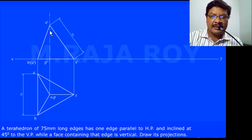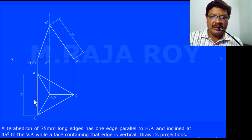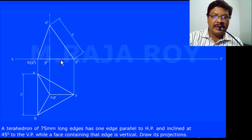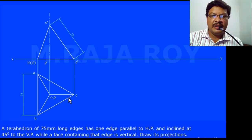While drawing the front view, the axis length is not given in the problem, but for the tetrahedron all face edges are equal and that face edge length is 75 mm. So if you consider face edge OC, this OC is parallel to XY. When the top view is parallel to XY, you will get the true shape of the line in the front view. So this particular face edge can be considered as a straight line inclined to HP and parallel to VP, and the front view of OC will give the true length of 75 mm.